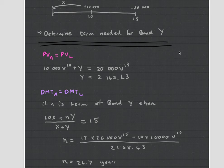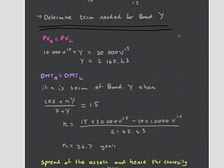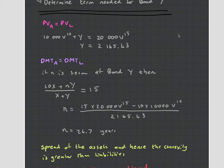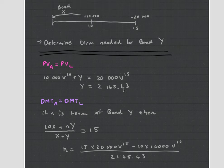N is bigger than 15, so it makes reasonable sense. Straight away, we can see the spread of the assets is greater than the spread of the liabilities, since the liabilities is a single amount and our assets are two amounts spread out. Remembering the blue and orange cash flow analogy, the assets have greater convexity. In the exam, you can use this general reasoning — say the spread of the assets is greater than the spread of the liabilities, therefore convexity is greater — and conclude that immunization is achieved. You don't even have to do the second calculation for a simple example like this.